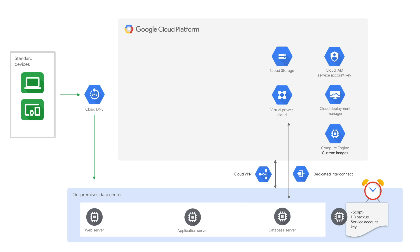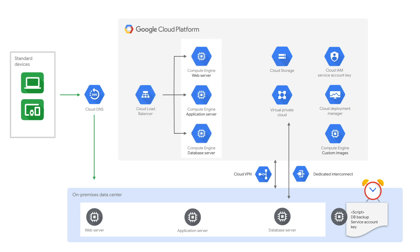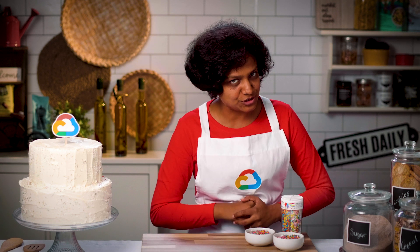When a disaster hits, all you need is to execute the deployment manager template, which will create a Google Cloud deployment automatically. Apply the most recent database backups and transaction logs from the cloud storage bucket. Test the application works as expected by simulating a user in the recovered environment. Then finally, point the cloud DNS to the web server on Google Cloud. When the production environment is running on premise again and the environment can support production workloads, we reverse the steps that we followed.